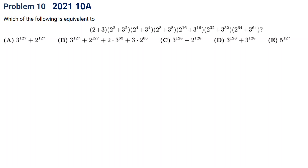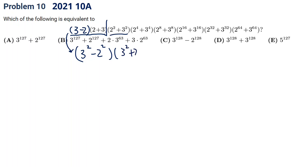This one requires some observation and experience. If we introduce a 3 minus 2 term here, these two become 3 squared minus 2 squared. Then using the difference of squares formula, if we multiply by 3 squared plus 2 squared, this becomes 3 to the fourth minus 2 to the fourth.